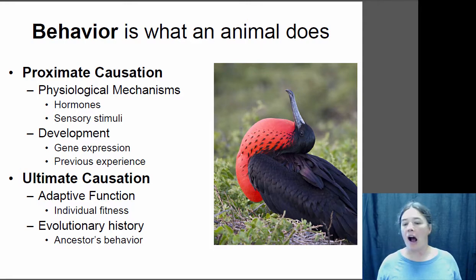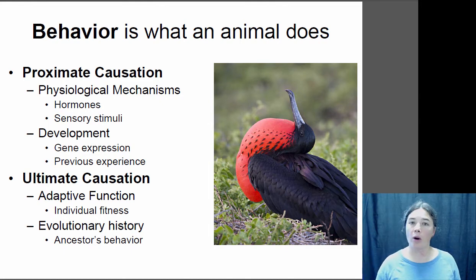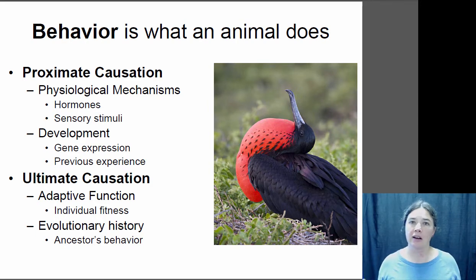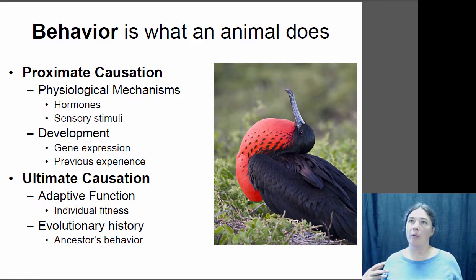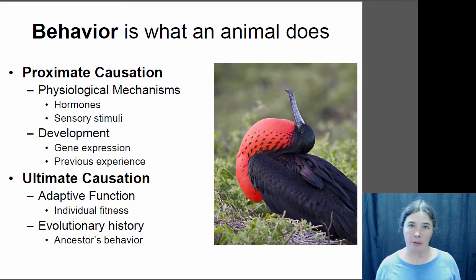Proximate cause is how that behavior functions. Those can be physiological mechanisms that underlie the behavior, like hormones, sensory stimuli, or neurological pathways — something within the body that dictates the way the behavior occurs. Or it could also be another type of proximate cause: the development of the behavior — how that behavior develops as the animal matures.